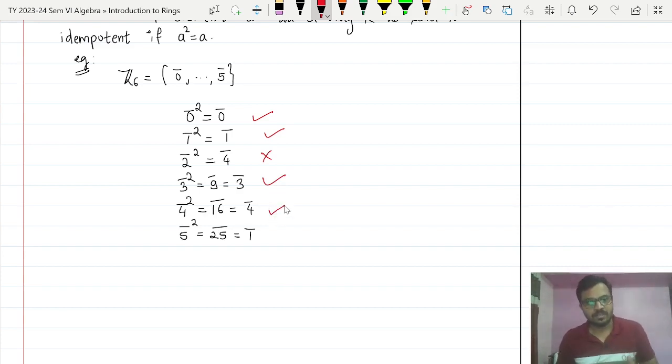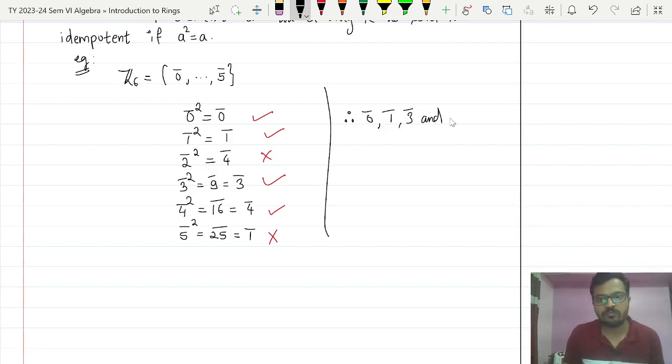So what are the idempotent? Therefore 0 bar, 1 bar, 3 bar, and 4 bar are idempotent in Z6.